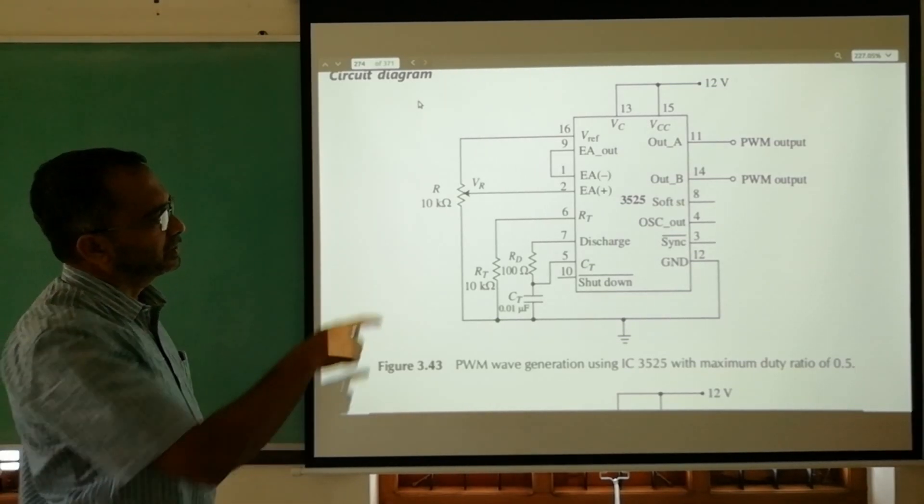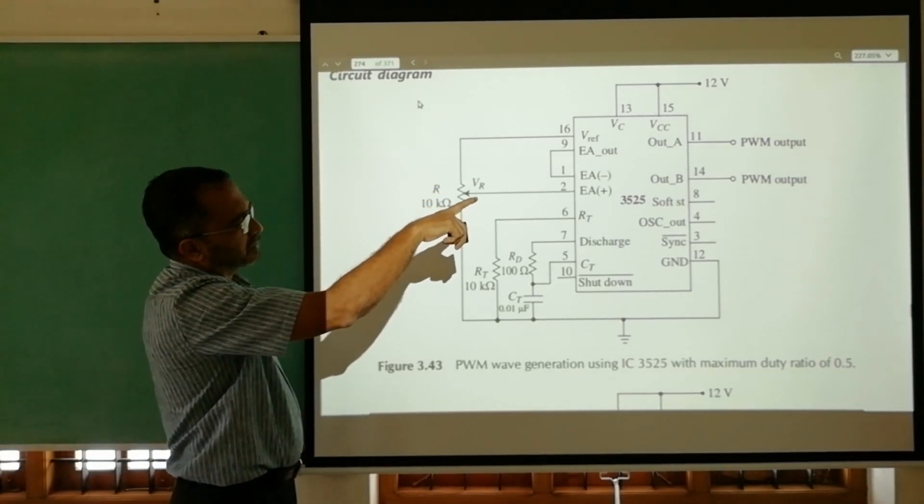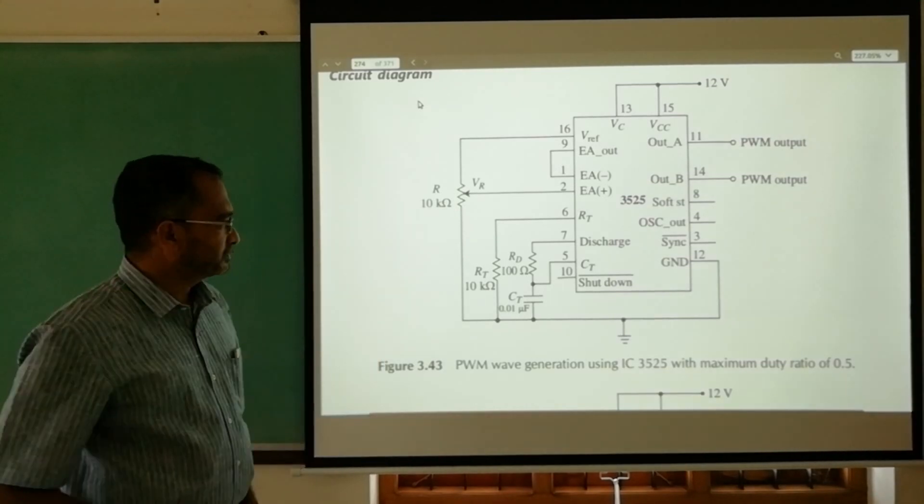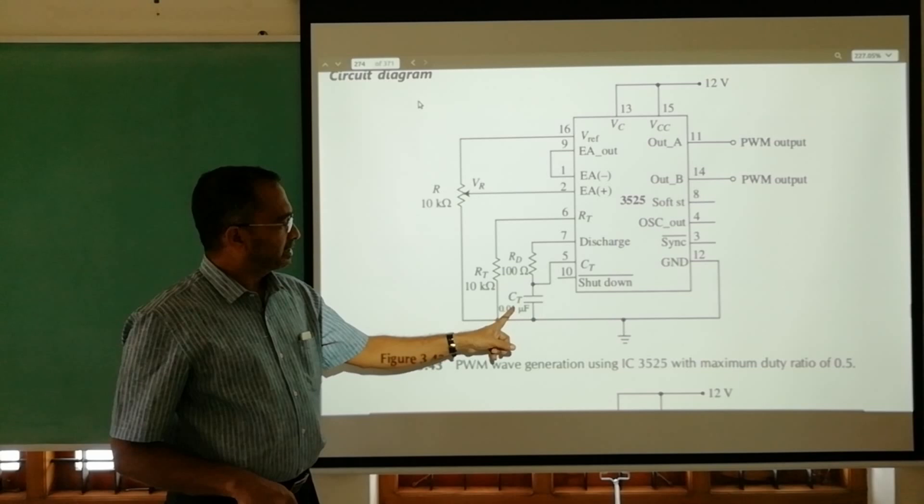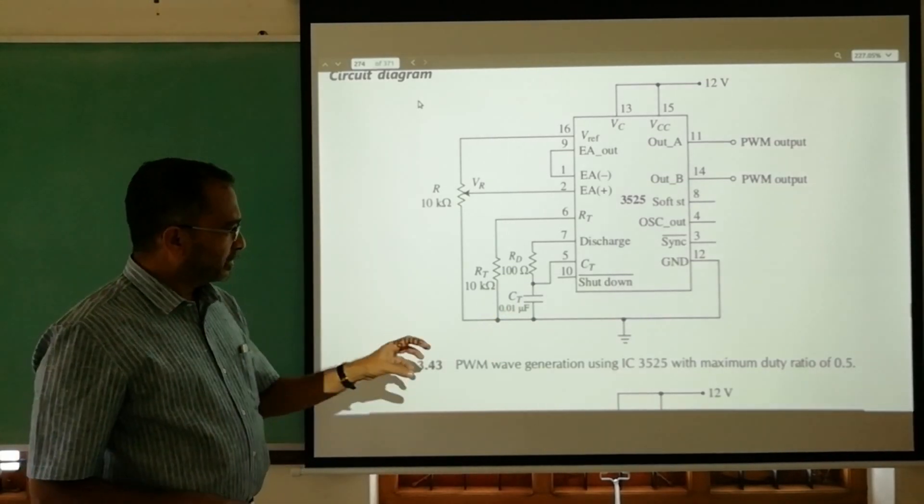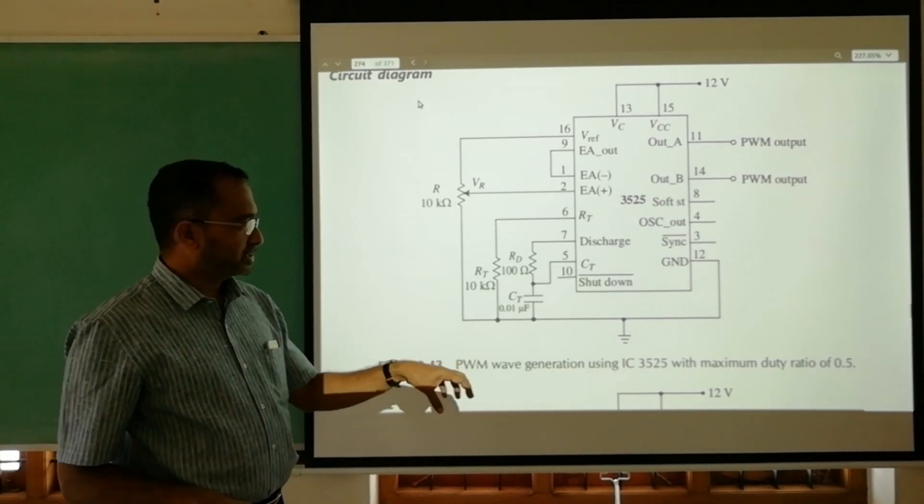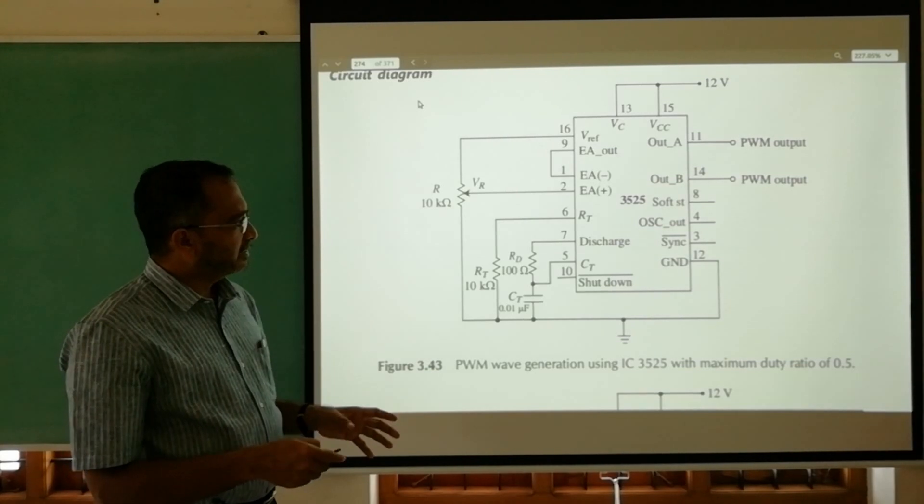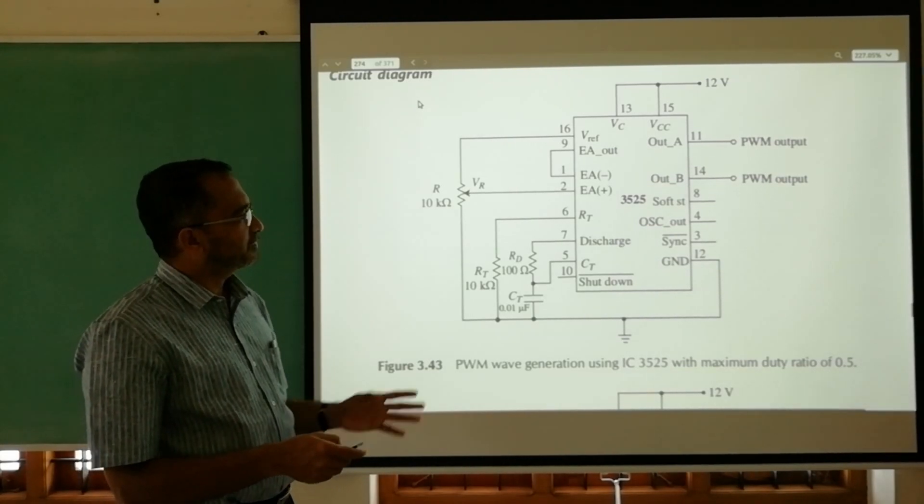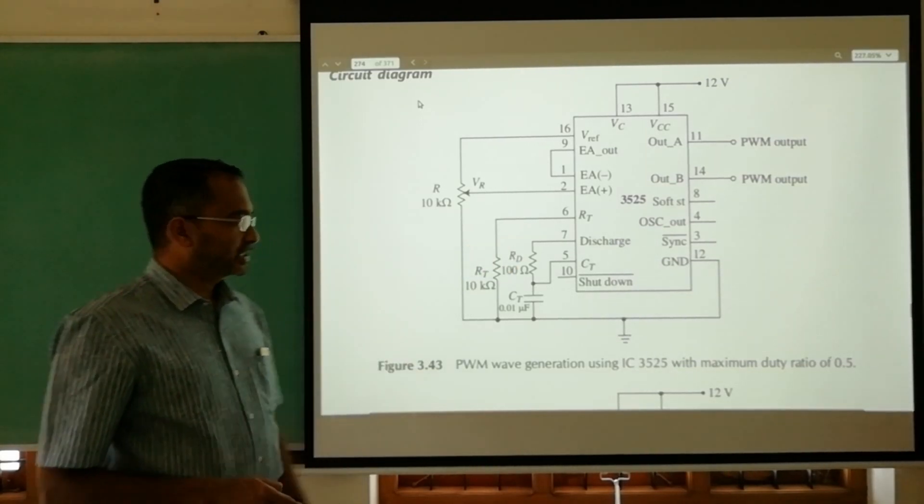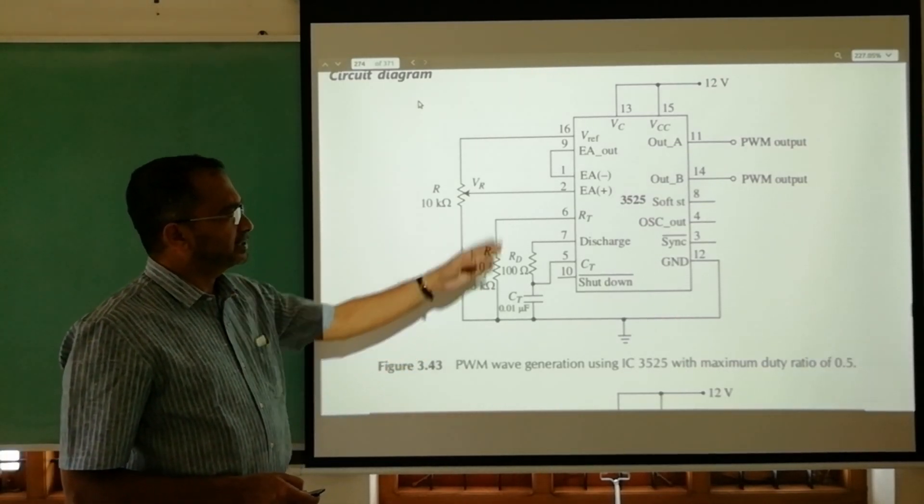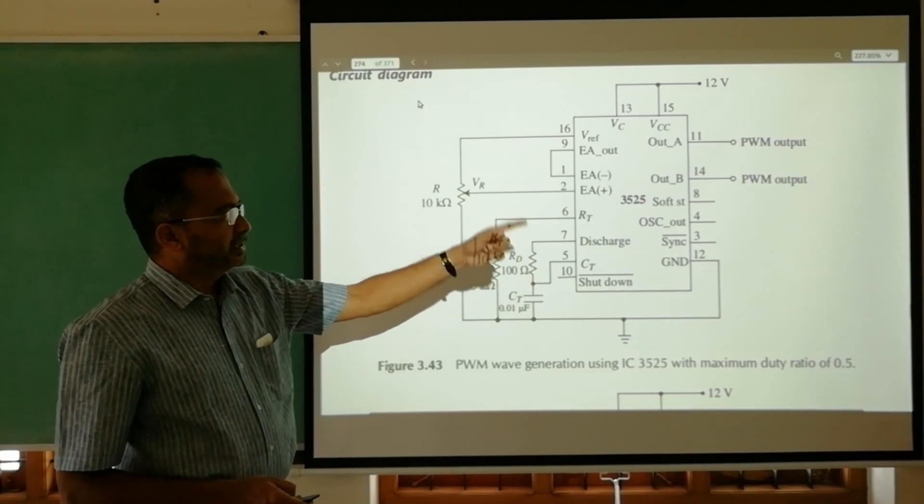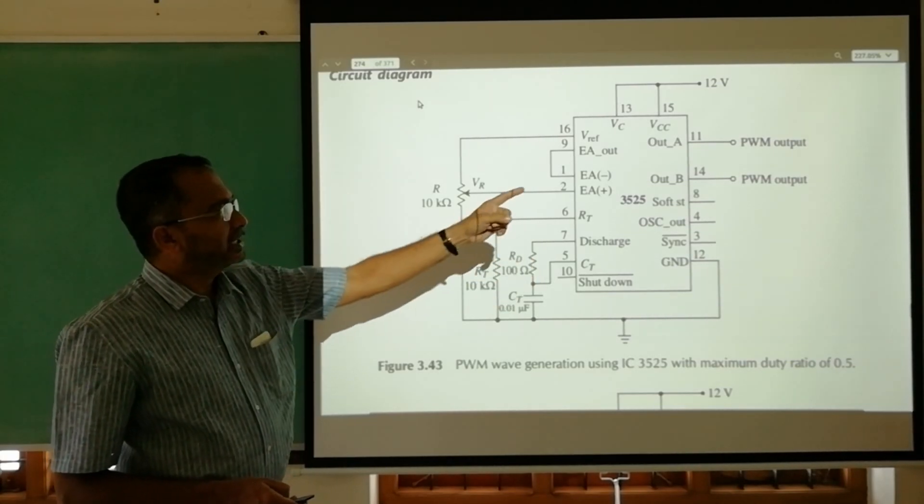These three components RT, RD, and CT, which are in that equation for frequency, can be adjusted. Thus we can select the frequency of the oscillation. The problem with this particular simple circuit is that the maximum duty cycle obtainable from 11 and 14 is up to 0.5.